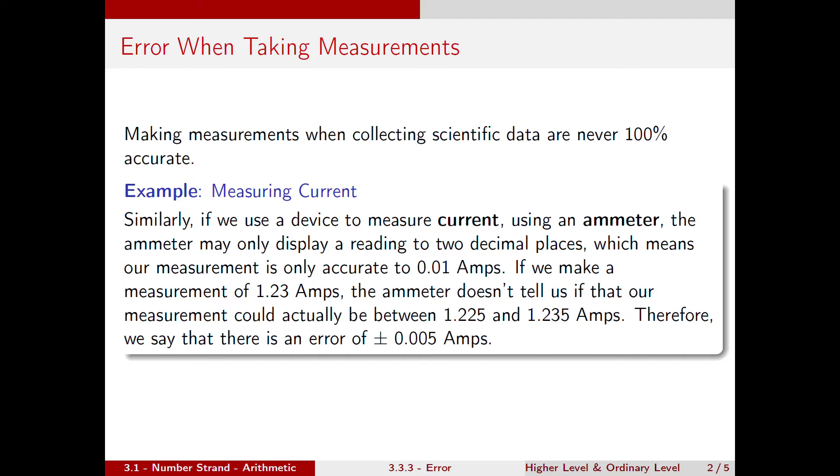This is due to rounding, so 1.225 will be rounded up to 1.23. We say that there is an error of plus or minus 0.005 amps.